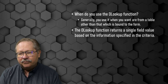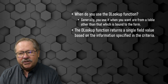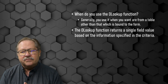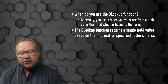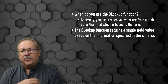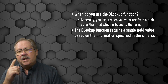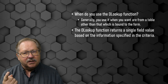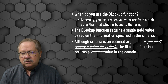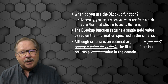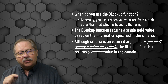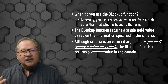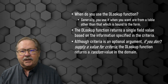DLOOKUP returns a single field value based on the information specified in the criteria. We know the field it wants to return, we know the table it comes from, and the criteria enables us to return a single value. Although criteria is an optional argument, if you don't supply criteria the DLOOKUP function returns a random value in the domain.